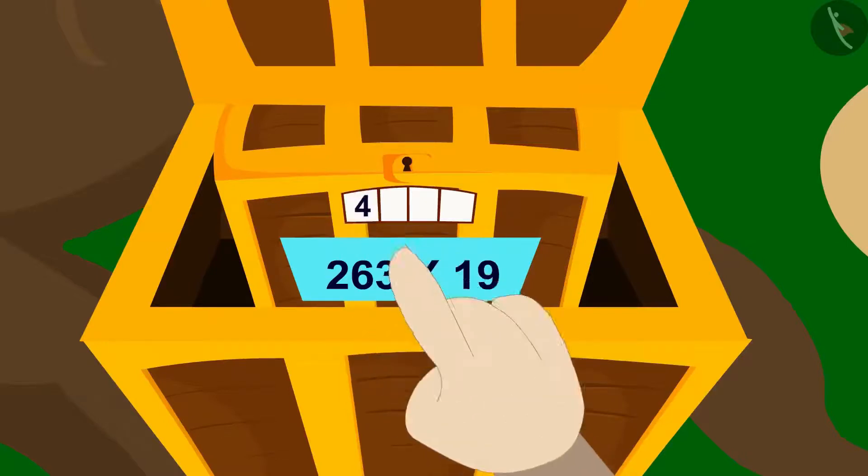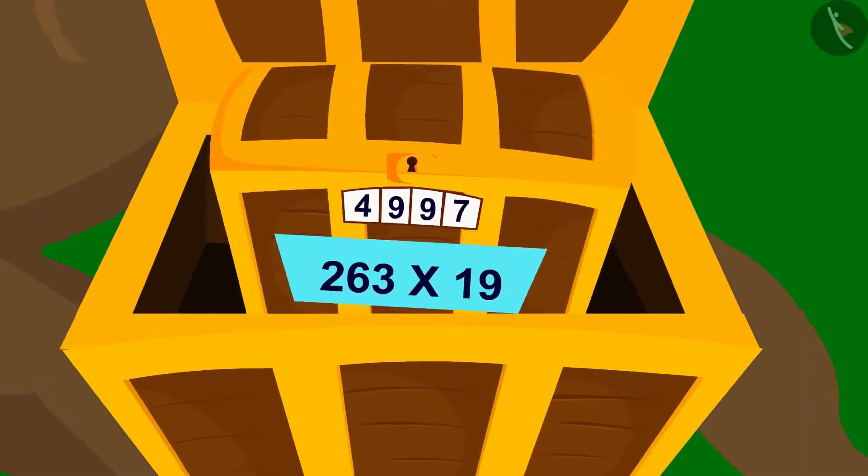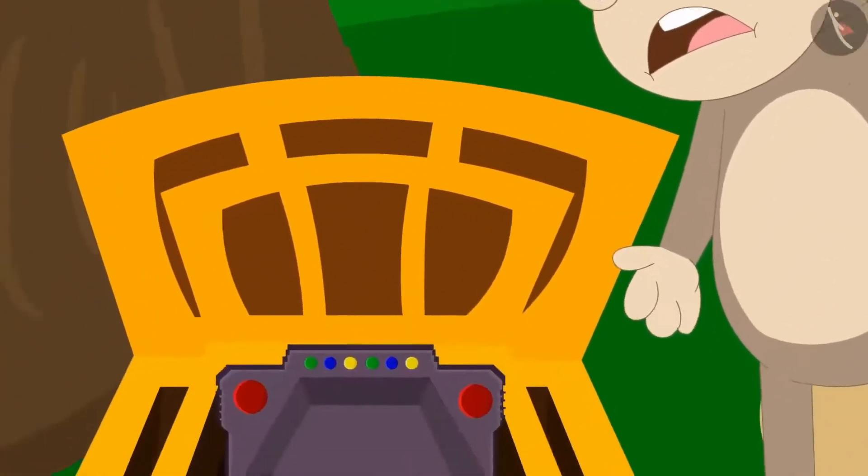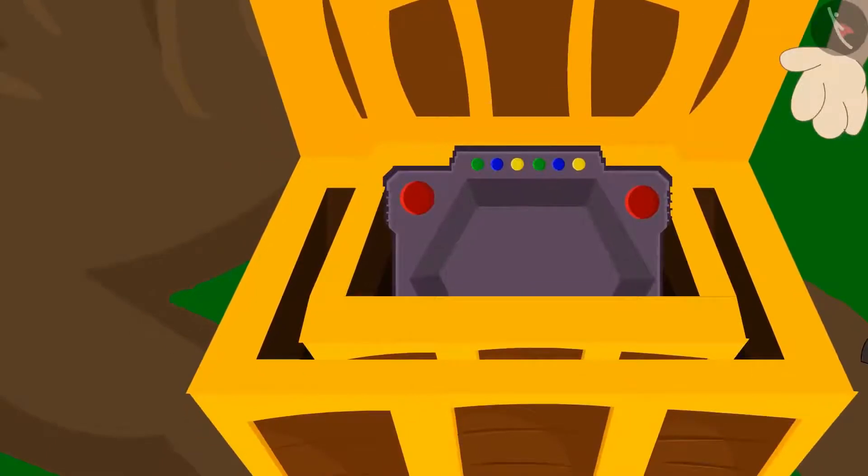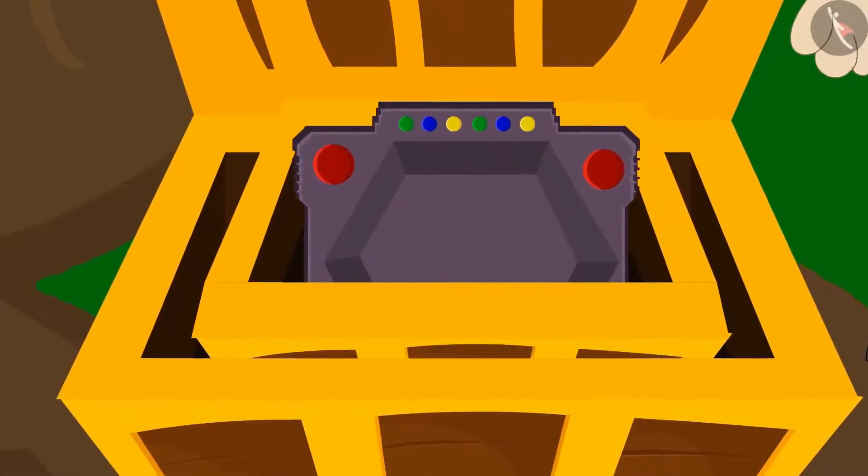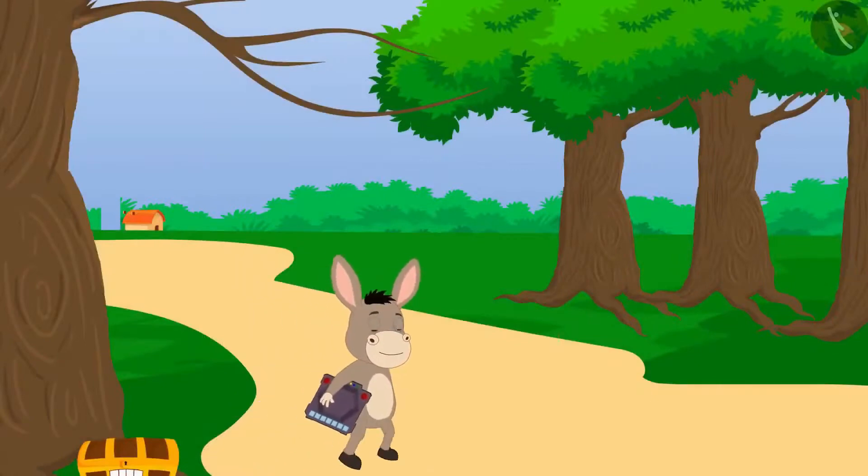Bhola quickly entered this code in the lock and the lock opened. When Bhola opened the small box, he found a unique toy in it. We will see what this unique toy can do in the next video. Bhola took the toy out of the box and went home with it.